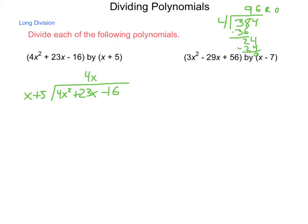Now, we're going to multiply, just as we did before. And this multiplication is going to be distribution. We're going to take this 4x, multiply it by both x and 5. So, 4x times x is 4x². 4x times 5 is 20x. Then, just like before, we're going to subtract. 4x² - 4x² is 0. 23x - 20x is going to leave us with just 3x. We're then going to bring down the next term, so we have -16.